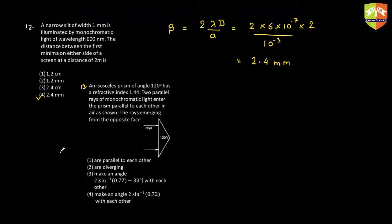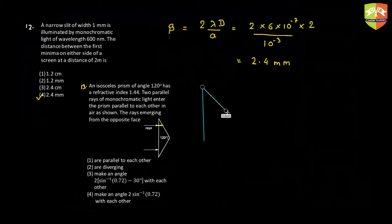Question 13: two rays hit the first surface of the prism along the normal, so they go straight through and then hit the other surface. One student said they will remain parallel and answered option 1 — let me solve this properly.